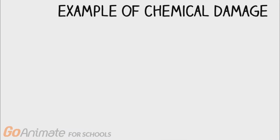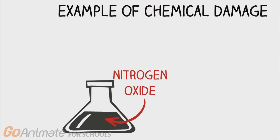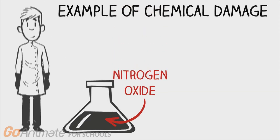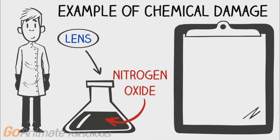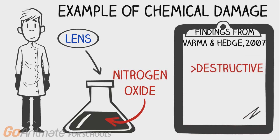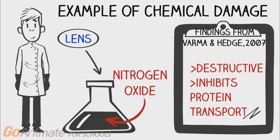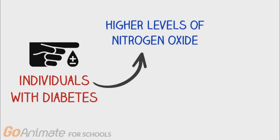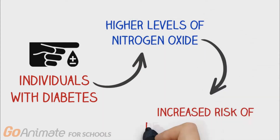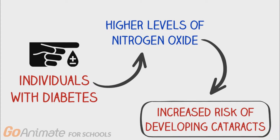One chemical that has been shown to cause damage to the lens is nitrogen oxide. In one study, scientists took lenses and bathed them in solutions containing high levels of nitrogen oxide. They found that high nitrogen oxide levels are destructive to the lens and inhibit the transport of proteins required for normal lens function. Individuals with diabetes tend to have higher levels of nitrogen oxide, and thus are at an increased risk of developing cataracts.